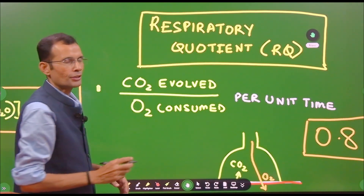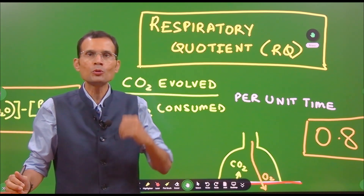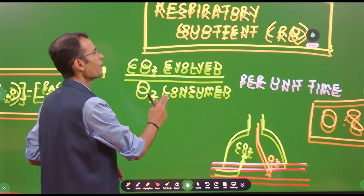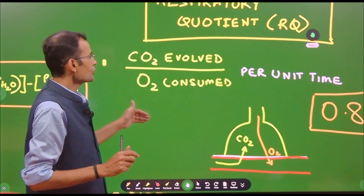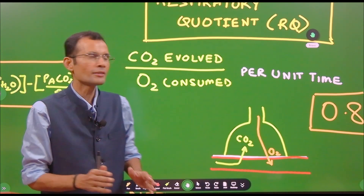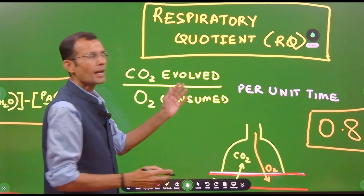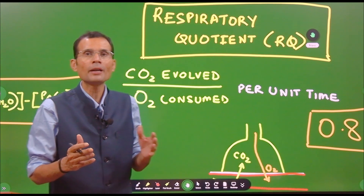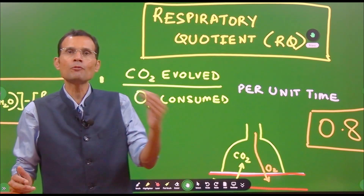What is the respiratory quotient? The name itself is indicative — respiration means O2 is consumed and CO2 is liberated. So, respiratory quotient is defined as the volume of CO2 evolved per volume of oxygen consumed. That ratio is called the respiratory quotient, and this is happening per unit time — let us say per minute — how much oxygen volume is being consumed and how much CO2 is being evolved.